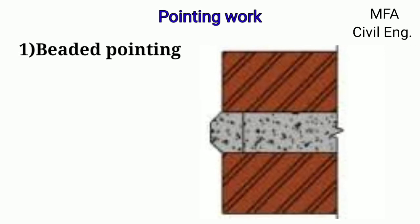Beaded type of pointing gives a very good appearance but is difficult to maintain. The raked joints are filled up with mortar and finished flush with the face of the wall, then a bead is formed by a steel rod having a concave edge in the middle of the joint.